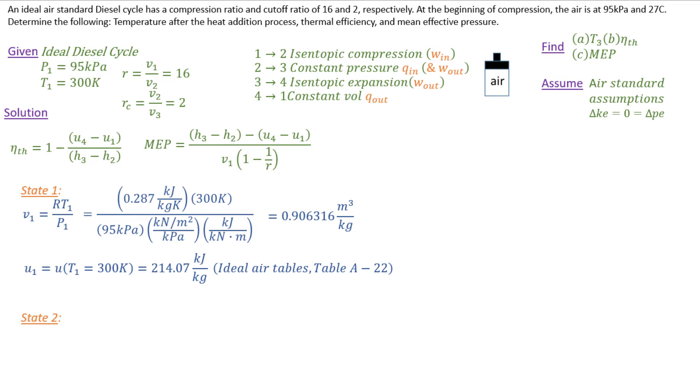And then I go to state 2. I know I have an isentropic process from state 1 to state 2, so I apply an isentropic relationship. I'm going to use the one that deals with the specific volume ratio since I do know the ratio of specific volumes between 1 and 2. This is just 1 over the compression ratio, which is 1 over 16. Then the relative specific volume at state 1, I can pull off the ideal air tables at 300 Kelvin and solve for VR_2.